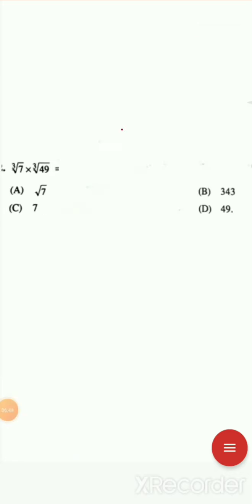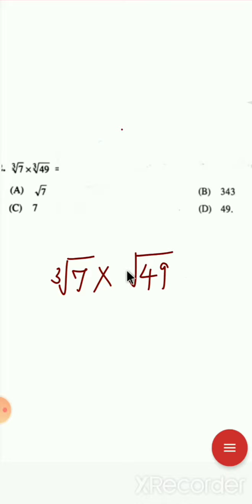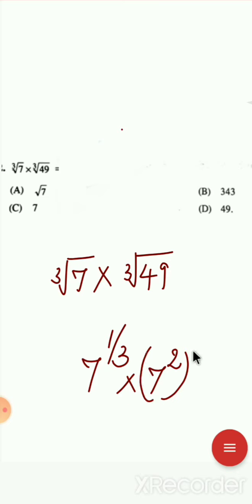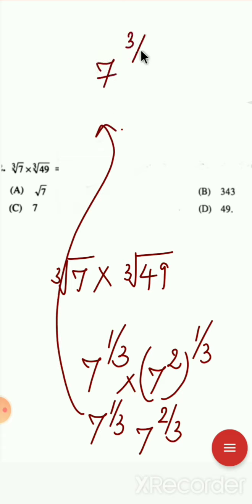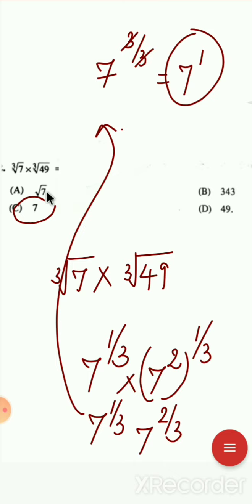Next question: cube root of 7 multiplied by cube root of 49 equals what? We write cube root of 7 as 7^(1/3). Cube root of 49, which is 7 squared, becomes (7²)^(1/3) = 7^(2/3). Combining: 7^(1/3) × 7^(2/3) = 7^(3/3) = 7^1 = 7. So the answer is option C: 7. You can solve this type of question using this method.